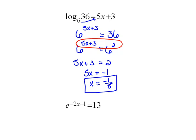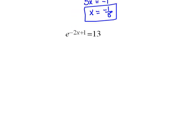Okay, let's try one more. This one says we've got e to the negative 2x plus 1 equals 13. In this case, we're in exponential form.